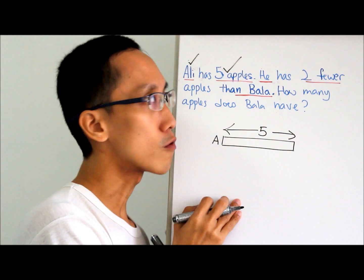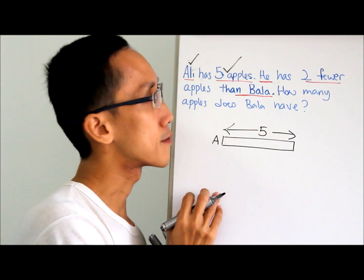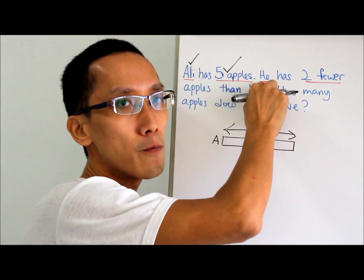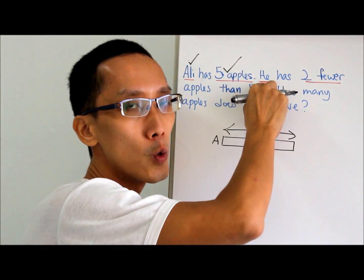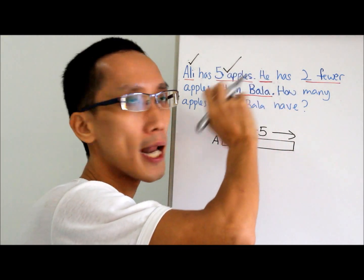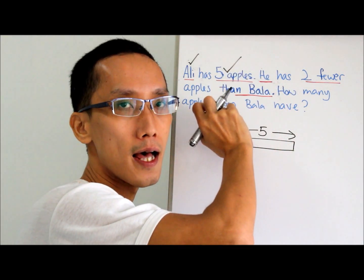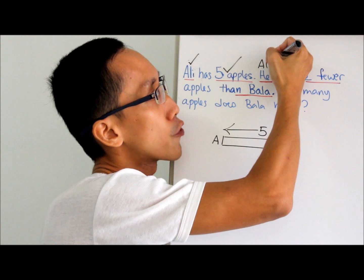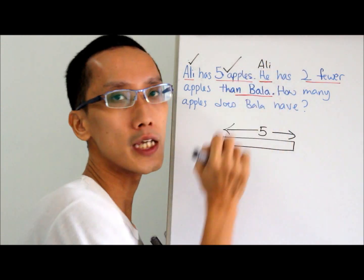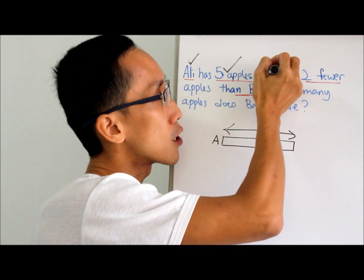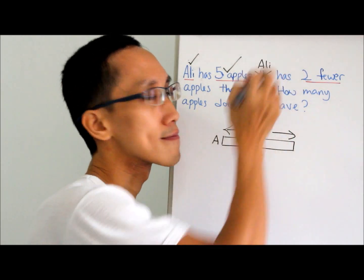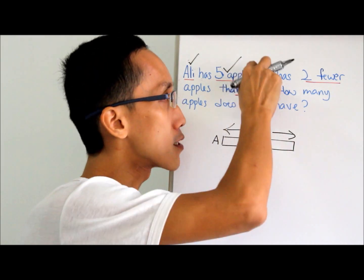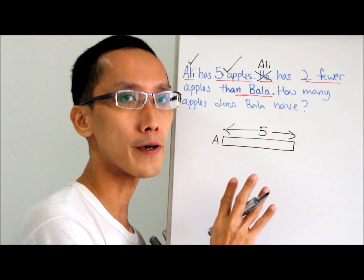Now we go to this — 'He.' This 'He' represents who? Ali or Bala? Ali. Great. Then write down 'Ali' on top of 'He.' Put a tick so that your child will focus on Ali.